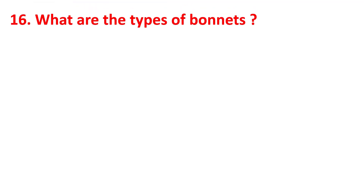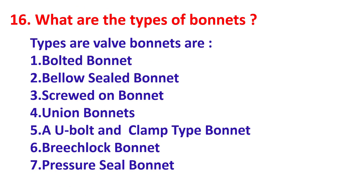What are types of bonnets? Types of valve bonnets are: bolted bonnet, bellow sealed bonnet, screw-on bonnet, union bonnet, heavy bolt and clamp type bonnet, pressure seal bonnet, and ditch rock bonnet.